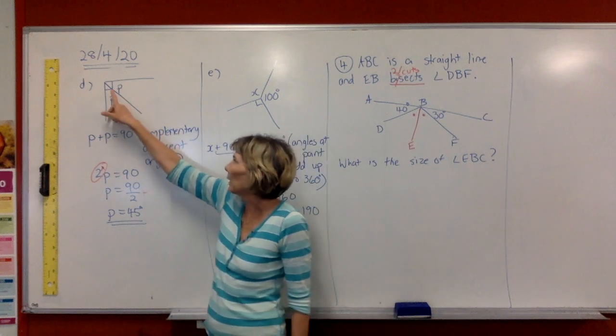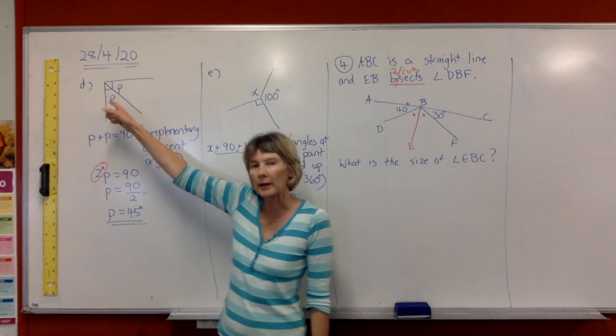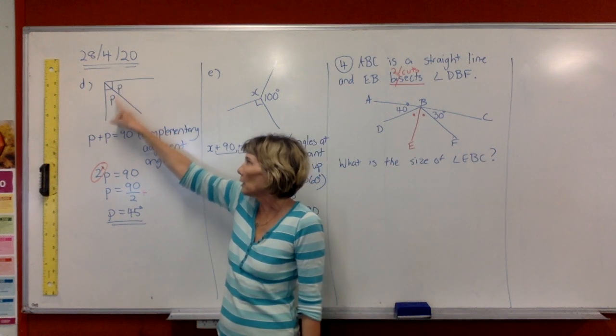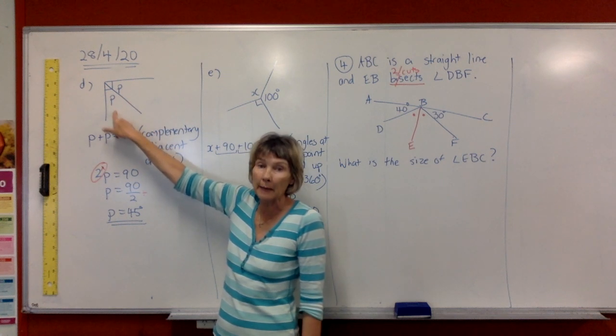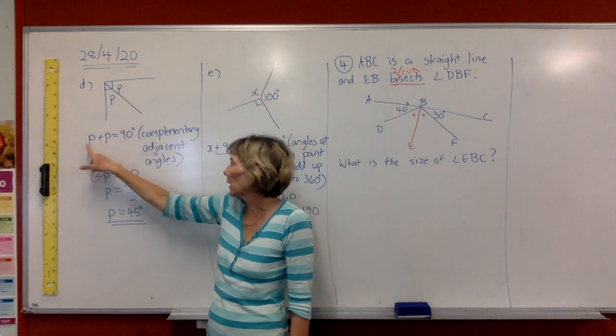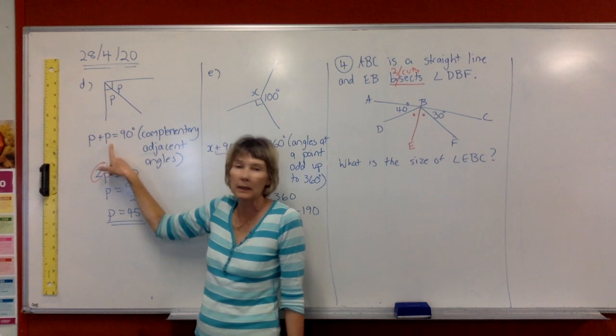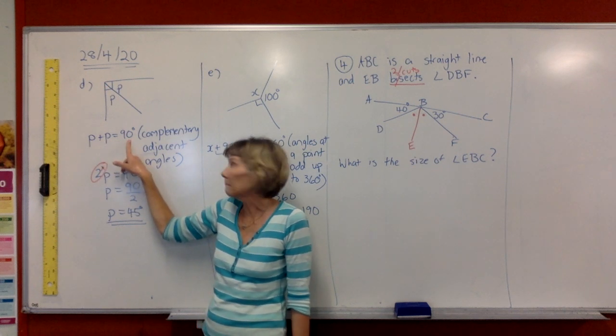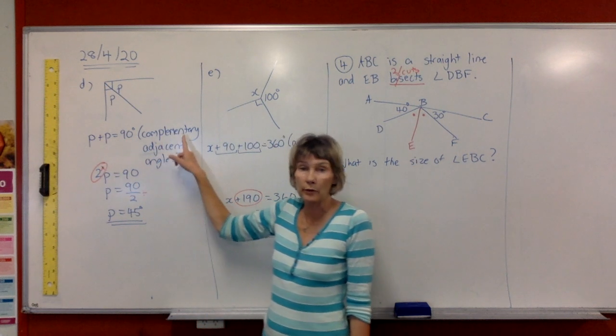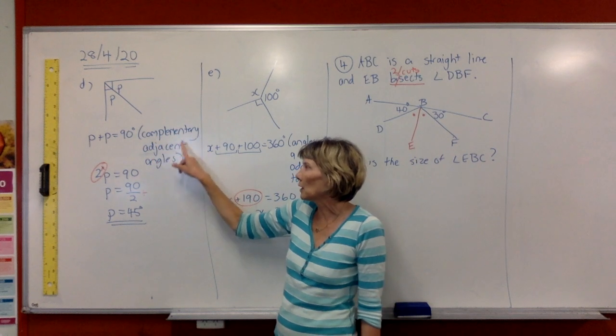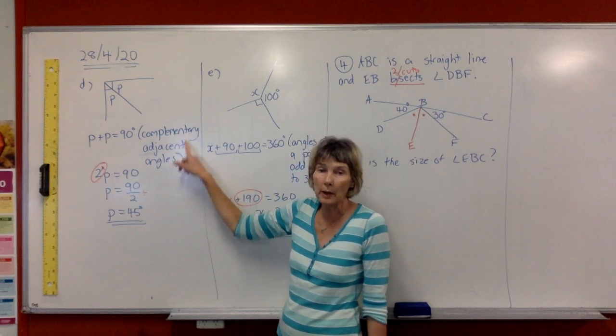So when we look at it, we have a right angle here, so we know that's 90 degrees. We know these two angles have to add up to 90 degrees, so we're going to write P plus P equals 90 degrees. And the reason we've used before, complementary adjacent angles. Write the whole thing down.